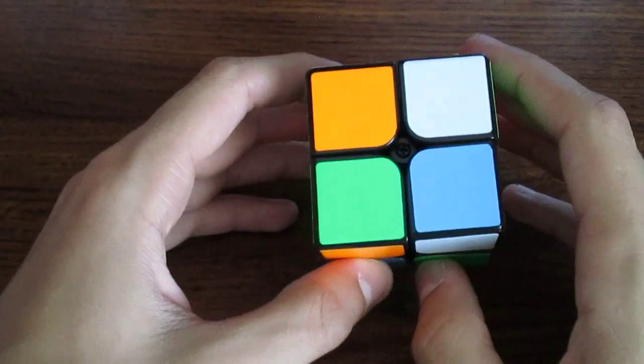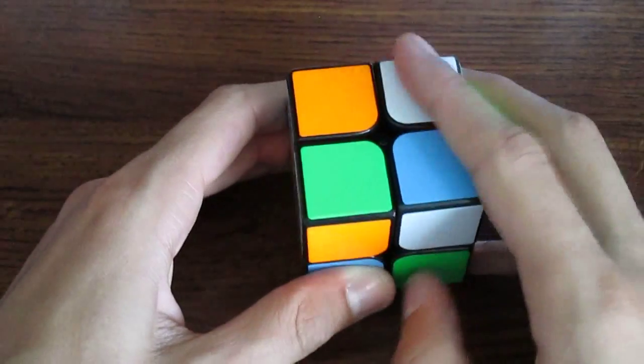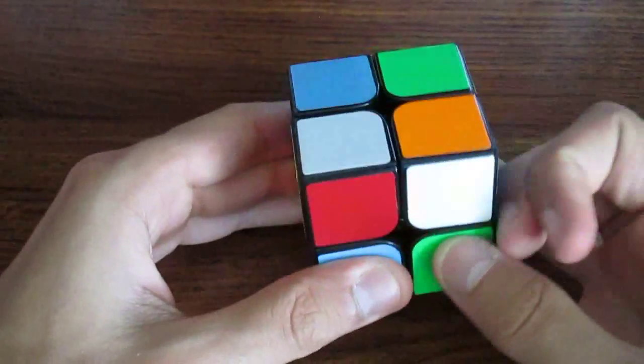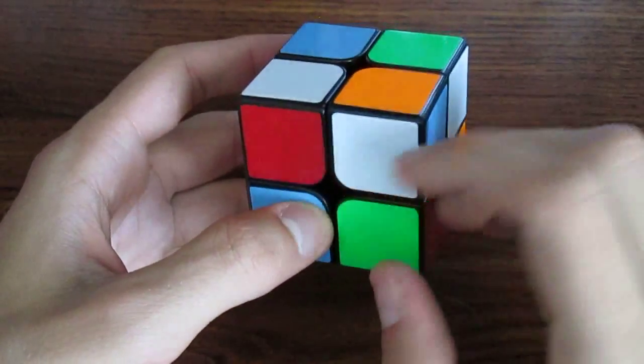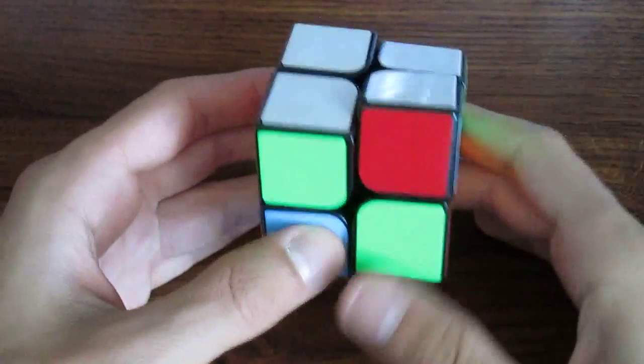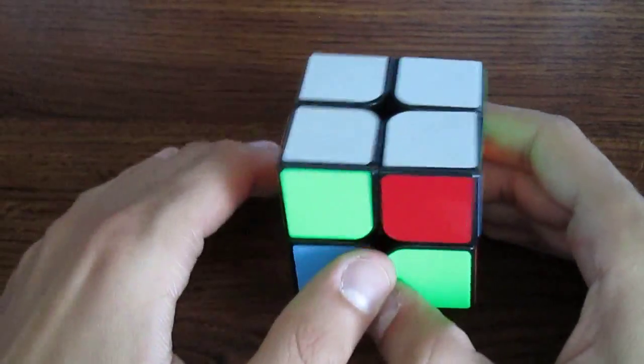This piece needs to go down here. So we can just insert that. And now we see our OLL case with one white on top. And then I see one here and here. So I know that it is this algorithm we actually know from solving the three by three. That solves the top.